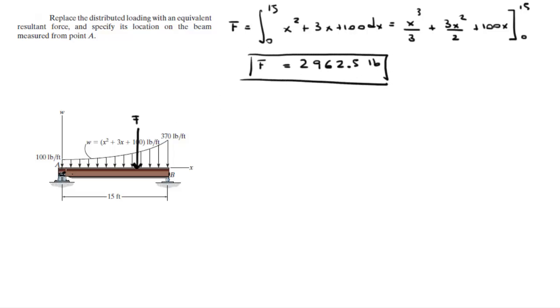Now, the distance that is being applied from A, let's call it x bar. x bar is given by the integral from 0 to 15 of x times the function x squared plus 3x plus 100 dx.